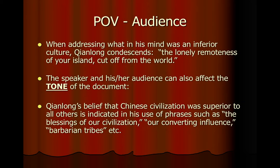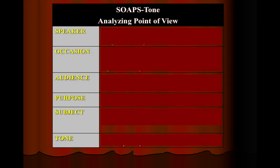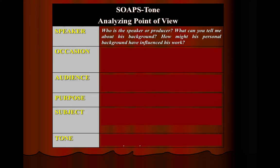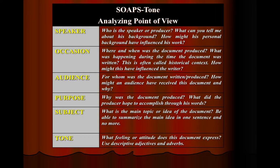When it comes time to analyze a primary source document for a DBQ essay, many historians like to use the SOAPS model — sometimes called the HAP model as well. The S stands for Speaker, O is Occasion, A is Audience, P is Purpose, S is Subject, and then you also have to think about the overall Tone. You need to be thinking about each of these factors when analyzing a primary source document to figure out how these factors influenced the author of the document.